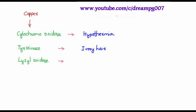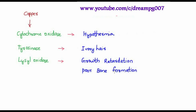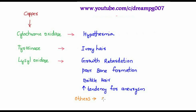Collagen cross-linking will be affected due to defective functioning of lysyl oxidase, which leads to growth retardation, poor bone formation, brittle hair, and increased tendency for aneurysm formation. Other features include seizures, cerebral and cerebellar degeneration.